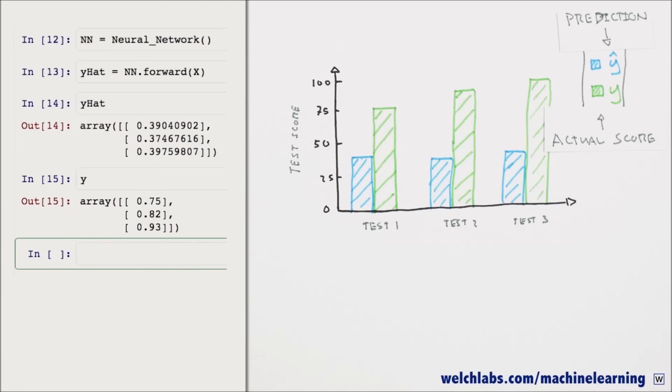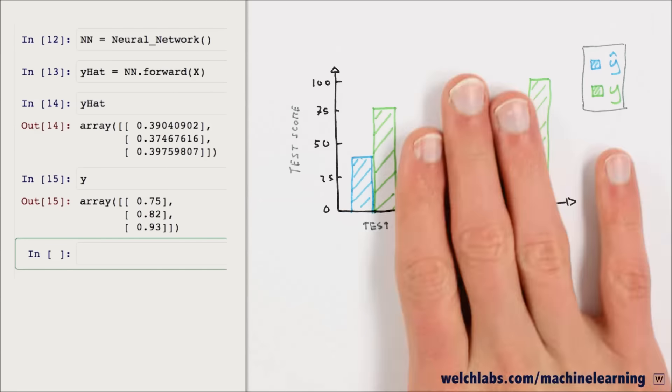We'll do this with a cost function. A cost function allows us to express exactly how wrong or costly our model is given our examples. One way to compute an overall cost is to take each error value, square it, and add these values together. Multiplying by one half will make things simpler down the road.